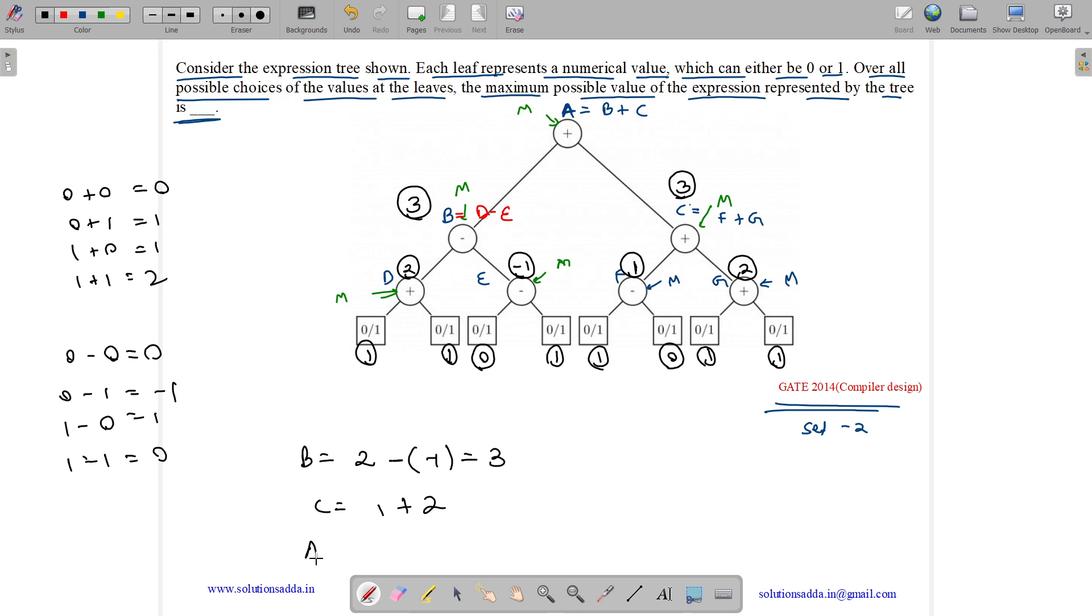What is A? A is B plus C. B is 3, C is 3, so it comes out to be 6. Maximum value is 6. The answer to this question is the maximum value of our tree is 6.